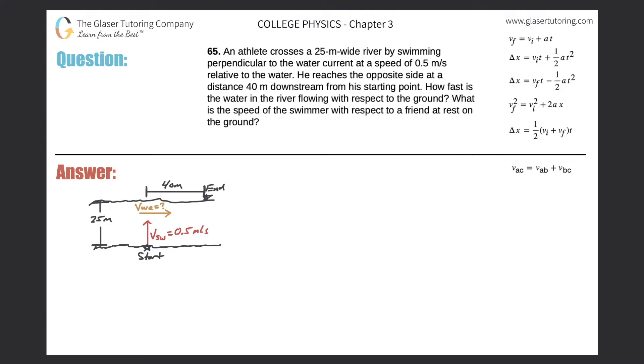Number 65. An athlete crosses a 25 meter wide river by swimming perpendicular to the water current at a speed of 0.5 meters per second relative to the water. He reaches the opposite side at a distance of 40 meters downstream from his starting point.